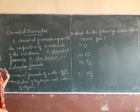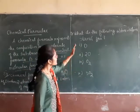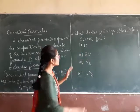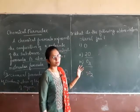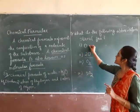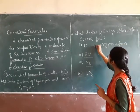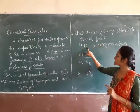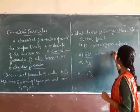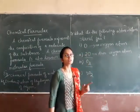Now a question: what do the following abbreviations stand for? If only O is written, what does it mean? If 2O is written, what does it mean? And if O2 is written, what does it mean? These are different from each other. Only O represents one oxygen atom. 2O means two oxygen atoms.